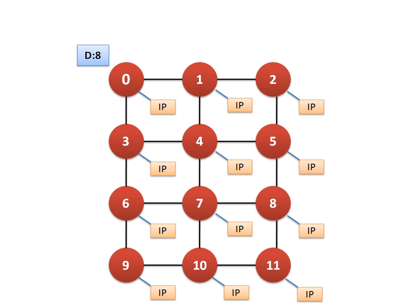The node first calculates whether the destination lies in the same column or not. If not, it will send the packet in the X direction. The next node does the same thing. If the destination node lies in the same column, then the packet will be sent in the Y direction. So as the name specifies, in XY routing every packet is sent in the X direction until the destination lies in the same column as the current node.